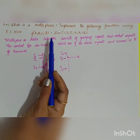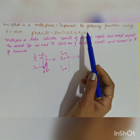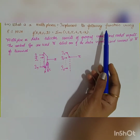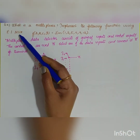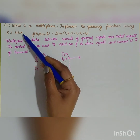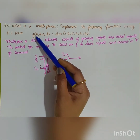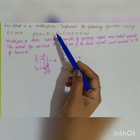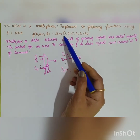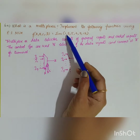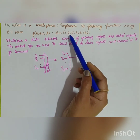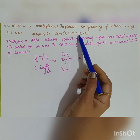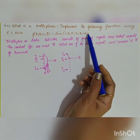The next question is: what is a multiplexer? Implement the following function using an 8-to-1 mux. The function F(a, b, c, d) is equal to the sum of minterms: 1, 2, 5, 6, 9, 12.